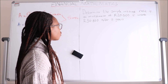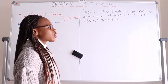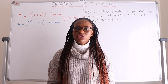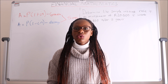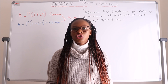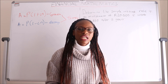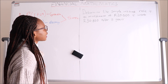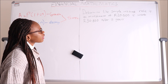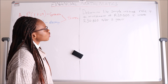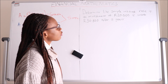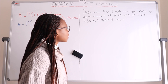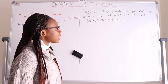We'll go straight into a question and see which equation to use and how to use it, and also how to choose an equation in financial mathematics. The question says: determine the simple interest rate if an investment of twenty thousand is worth thirty thousand eight hundred after three years.